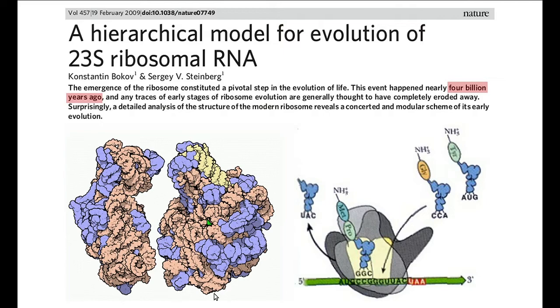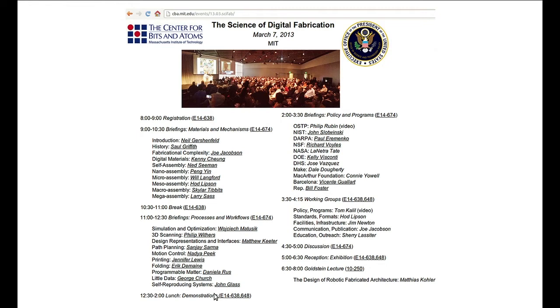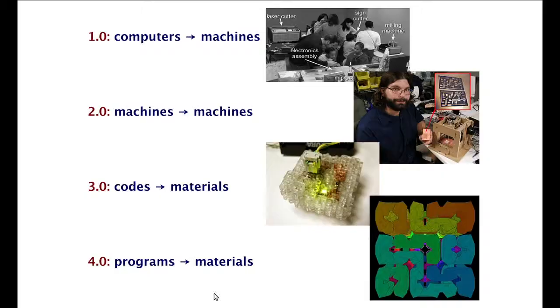A year ago, I was so irritated by government agencies asking me about their 3D printing projects. I ran a program with the White House OSTP and all the agencies to talk about digitizing not information in the computer — that dates back to the 50s — but actually digitizing the materials. Coming out of that, there's a research roadmap from computers controlling machines, to machines making machines, to then putting codes and programs in materials. What I want to run through now is what those steps look like, and then some of the surprising implications.